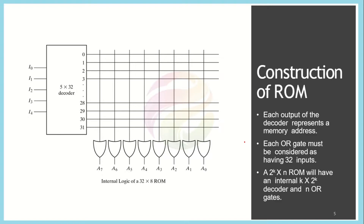Generally to represent a ROM we need a decoder. The decoder's main function is to access different locations according to the address lines given, so it offers the functionality of address decoding. Say we have a memory which is 32 × 8 — meaning 32 locations and 8 is the word size.